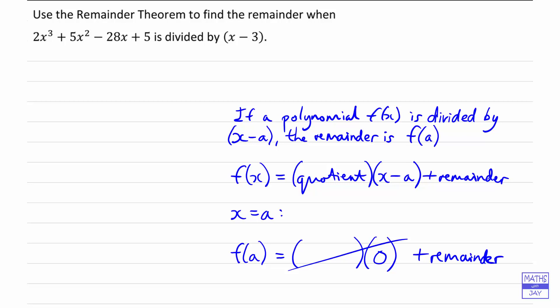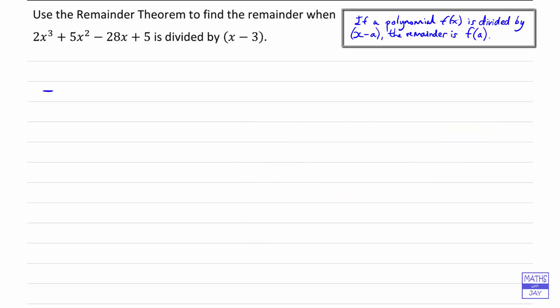So let's do that. All we need to do is first of all write down what f of x is. So that's 2x cubed plus 5x squared minus 28x plus 5.